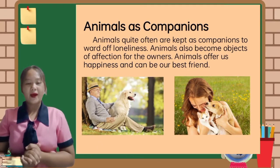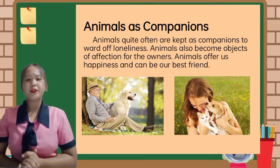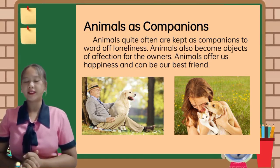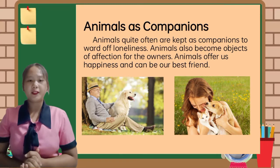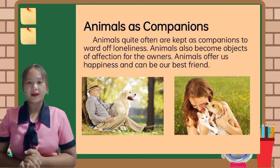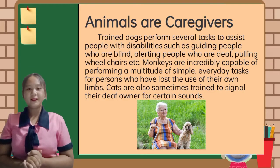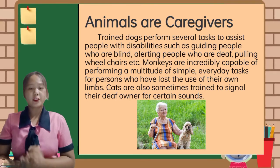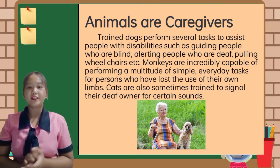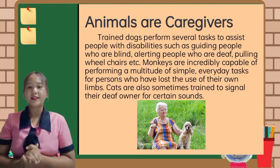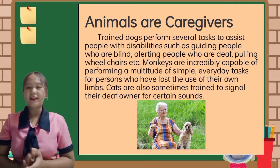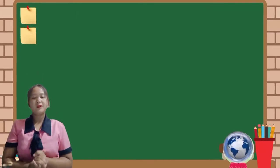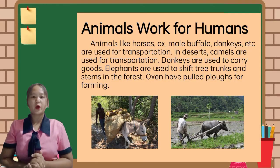Animals as companions: examples of those animals are dogs and cats. Those animals could serve as our best friend and would make us feel excited and happy. Animals as caregivers: some animals like trained dogs, monkeys, and trained cats are perfect caregivers because they could assist people with disabilities and guide them on the correct path.